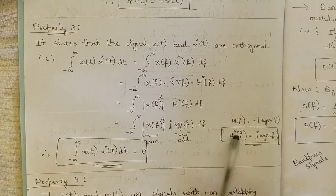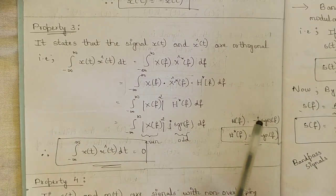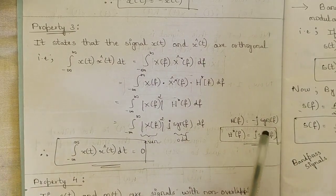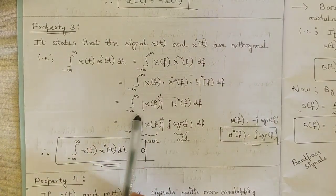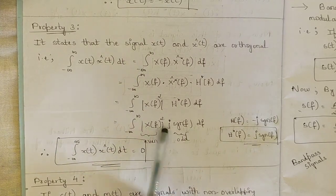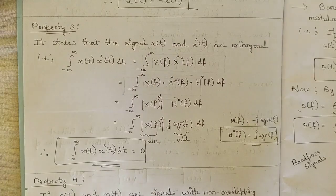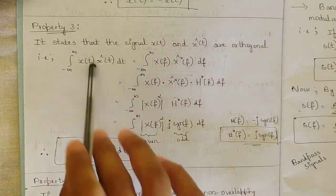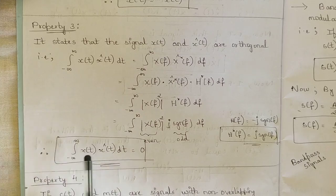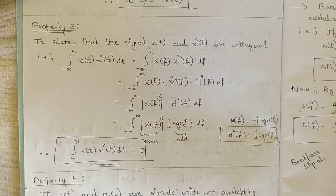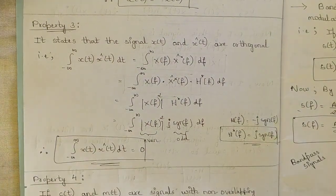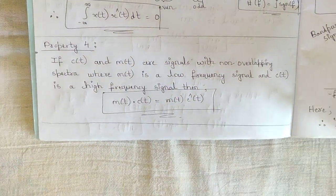We get the integral of |X(f)|² · H*(f) df, where H(f) = −j·sgn(f) and its conjugate H*(f) = j·sgn(f). This gives the integral of |X(f)|² · j·sgn(f) df. Since |X(f)|² is an even function and j·sgn(f) is an odd function, their product integrates to zero, confirming property 3: x(t) and x̂(t) are orthogonal.